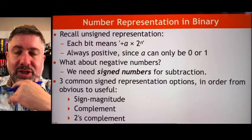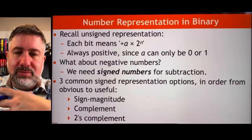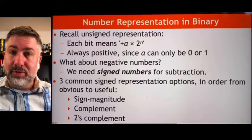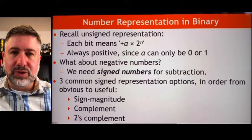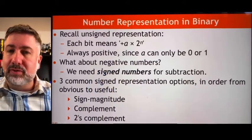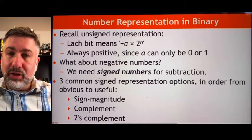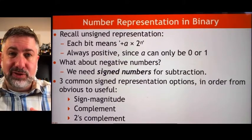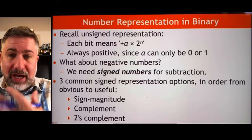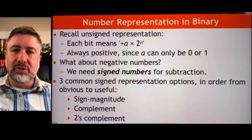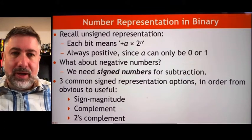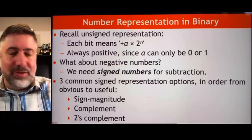We want to take a step back and see what the number systems we've invented really mean, and whether there's any way to represent a negative number given the number systems we're making use of. In binary number representation, each bit corresponds to a place value of two to the power of n. If there's a one there, you have that power of two; if there's a zero, you don't. There's no way to make a negative number because you can't subtract values away — all you can do is add them.